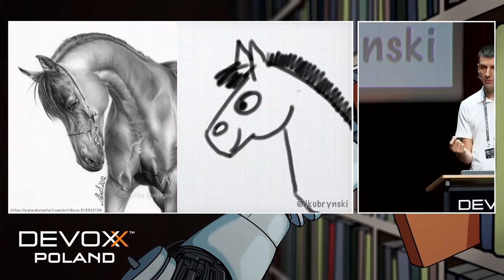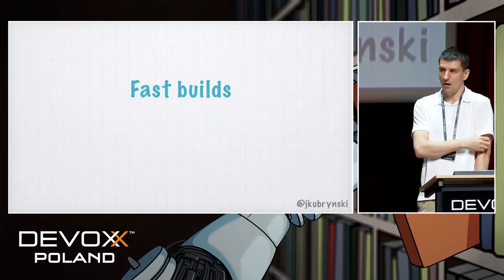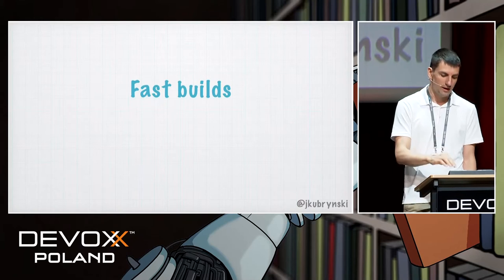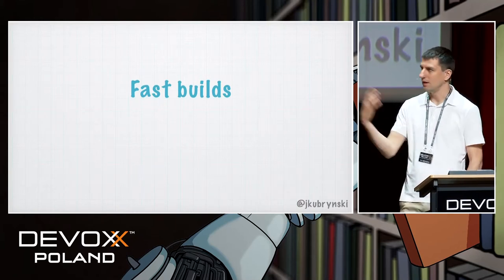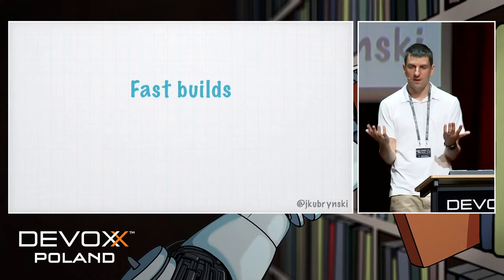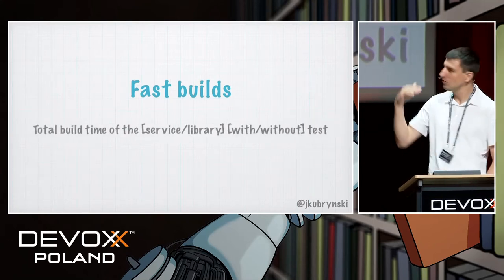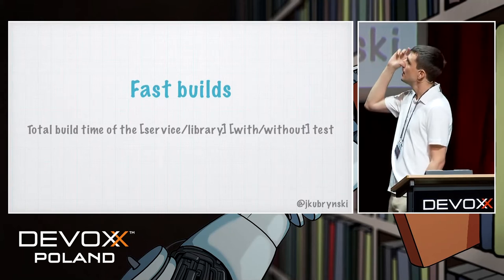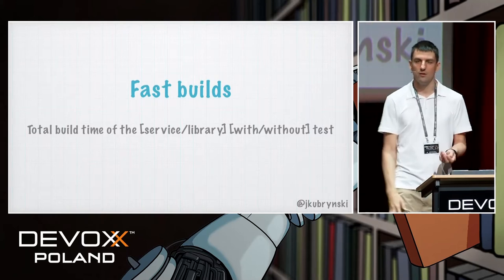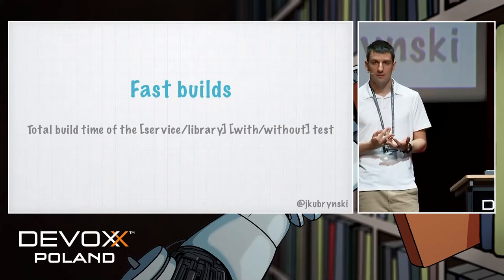The simplest architecture metric I can imagine is: I want to have fast builds. But fast builds can mean totally different things — if you're used to microservices and a service compiles over two minutes, you say it's too long. If you work with a legacy app at 45 minutes, you say it's much better than yesterday's 60 minutes. So we put the scale: fast build means the total build time of a service with tests is two minutes, and a library without tests is 30 seconds. That's the metric.